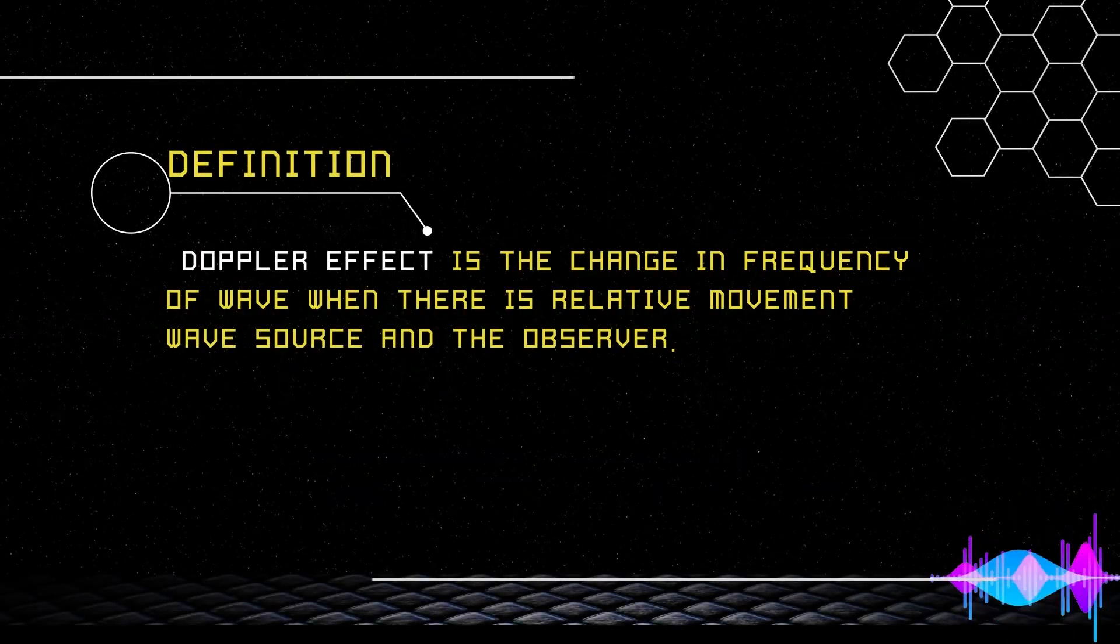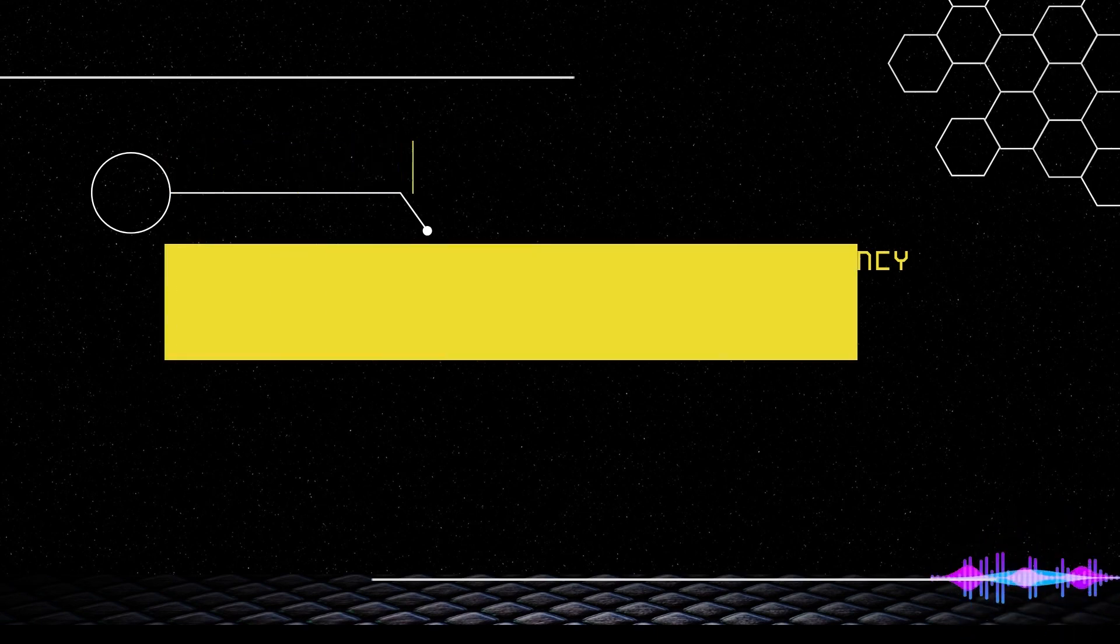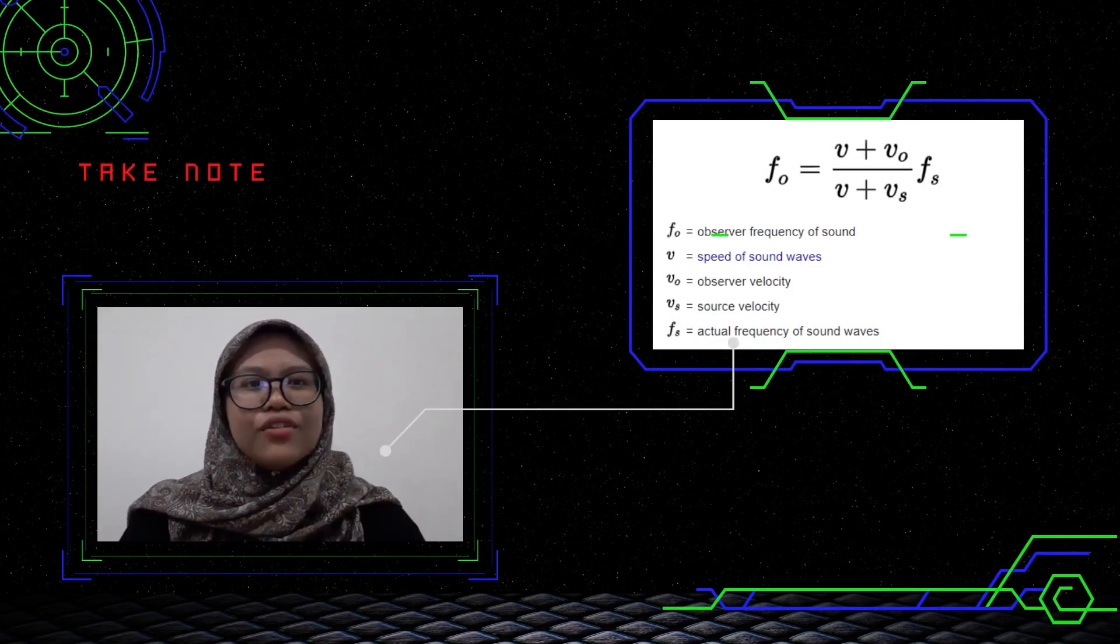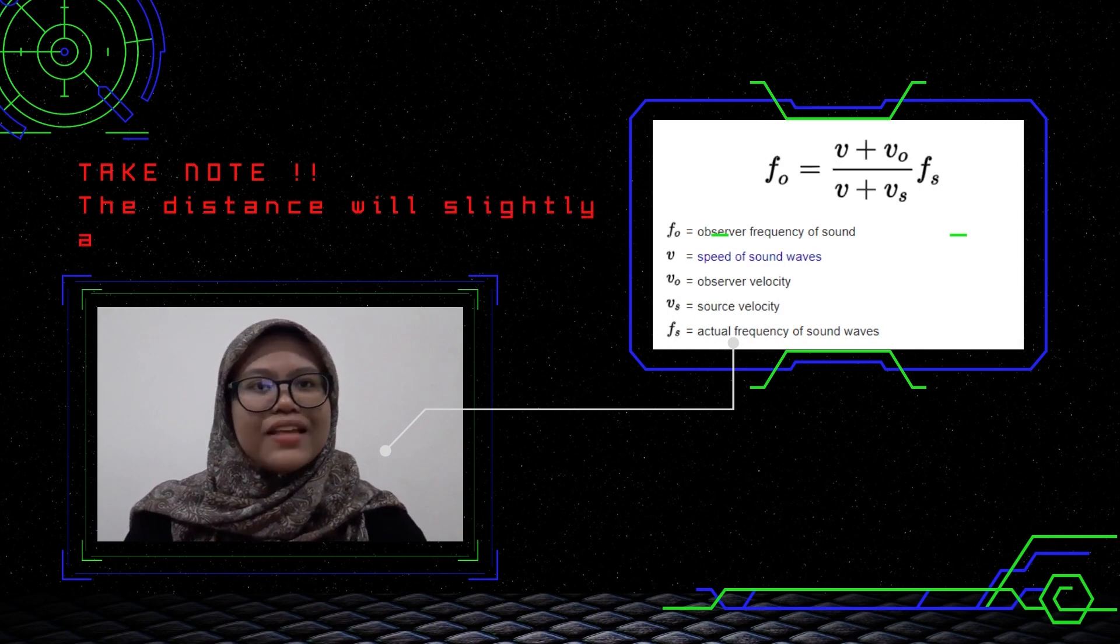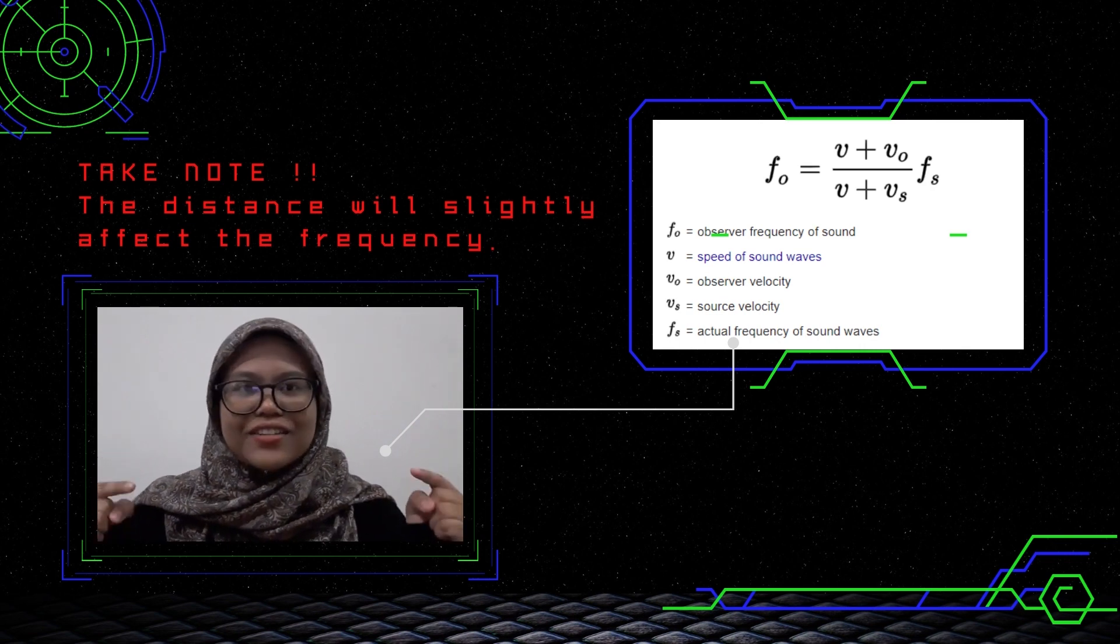By definition, Doppler effect is the change in frequency of waves when there is relative movement between wave source and the observer. You guys need to bear in mind that the Doppler effect does not depend on the distance. Instead, the new frequency depends on the ordinary frequency, the speed of wave, observer and the source.